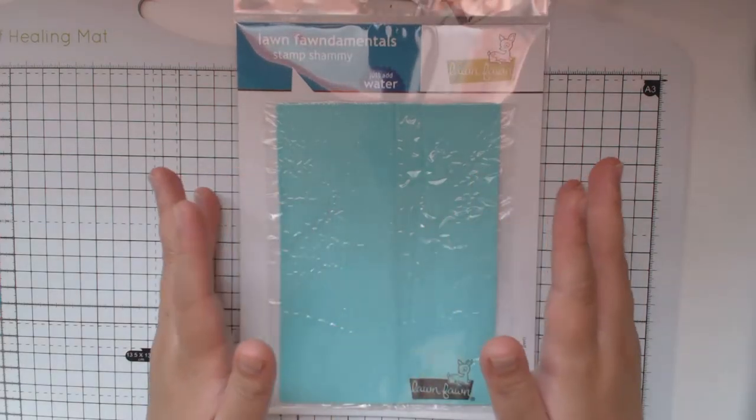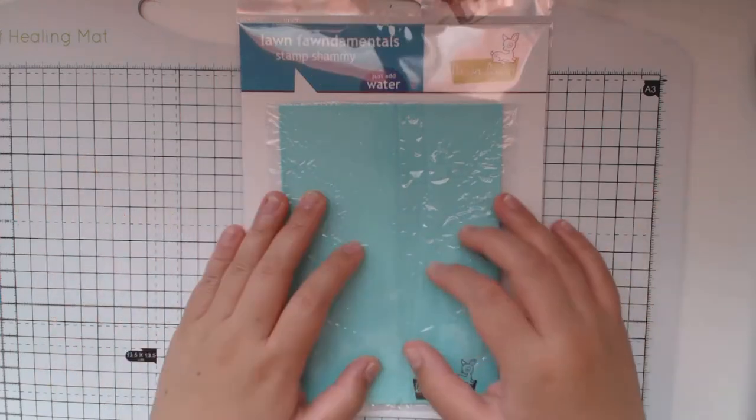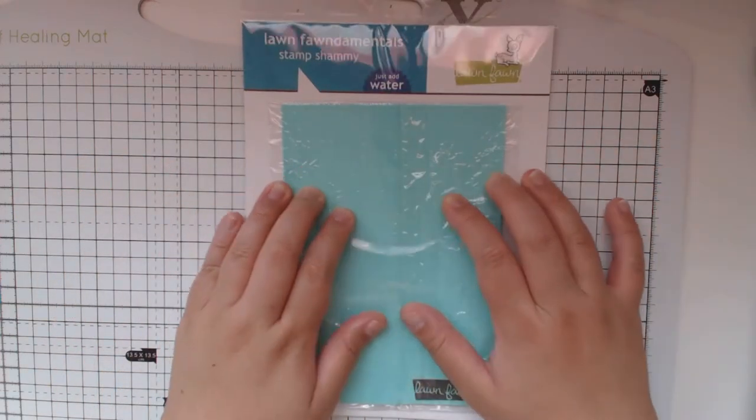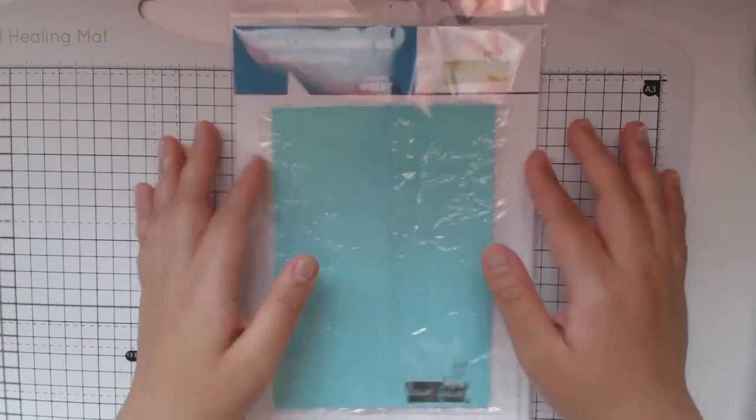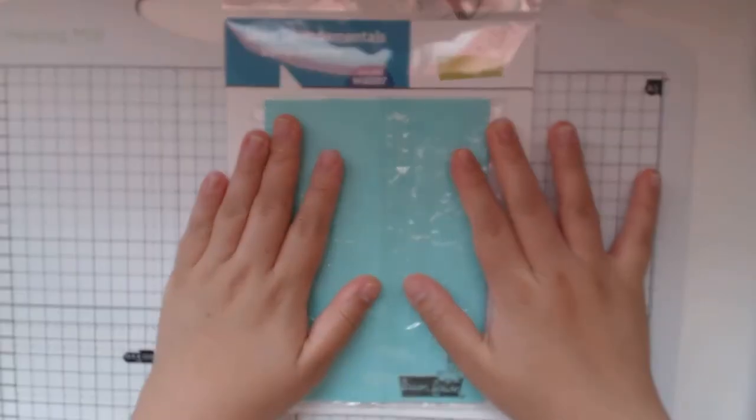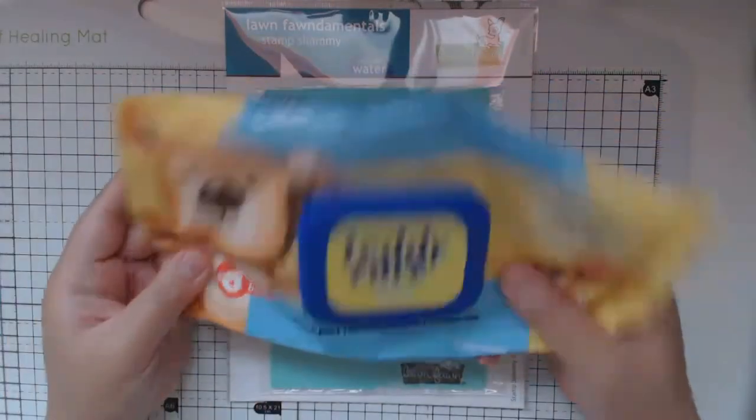You hydrate the cloth, then you can wipe your stamps clean or clean your stamping block. This is the best way to clean your stamps instead of using baby wipes.